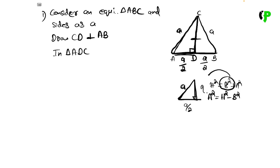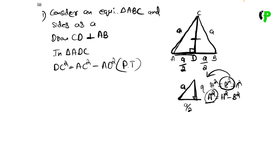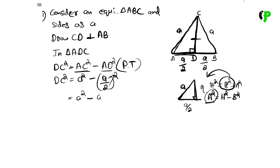A square is equal to hypotenuse square minus base square. So, DC square equals AC square minus AD square. We apply the Pythagorean theorem. Substituting: DC² = A² − (A/2)².